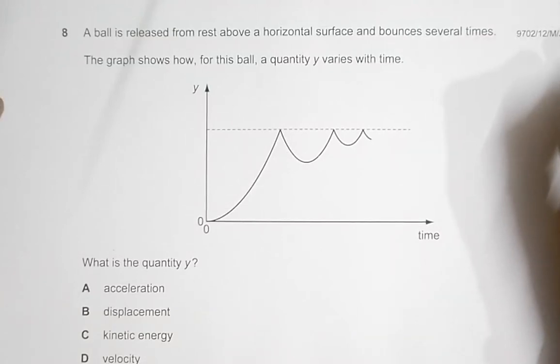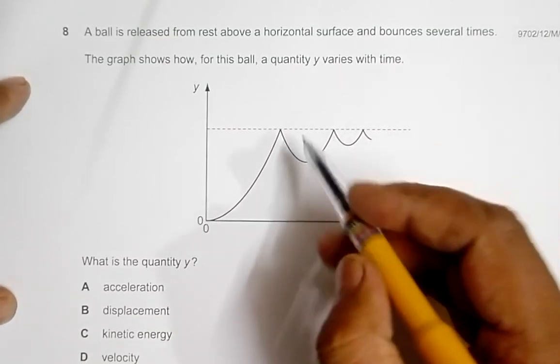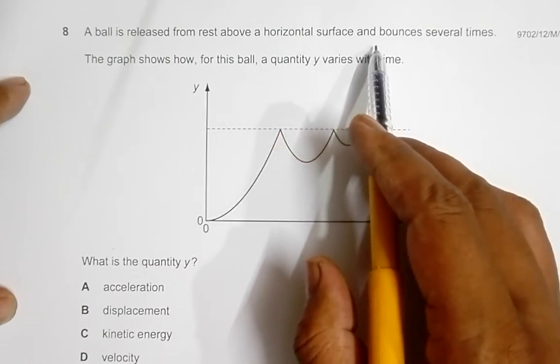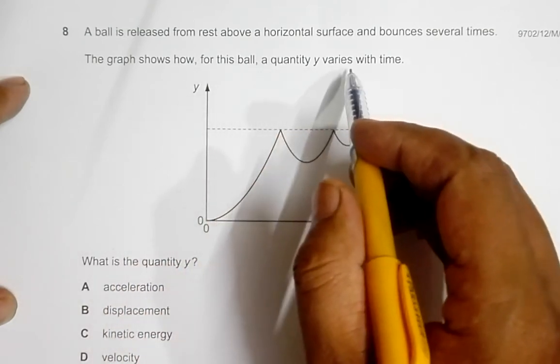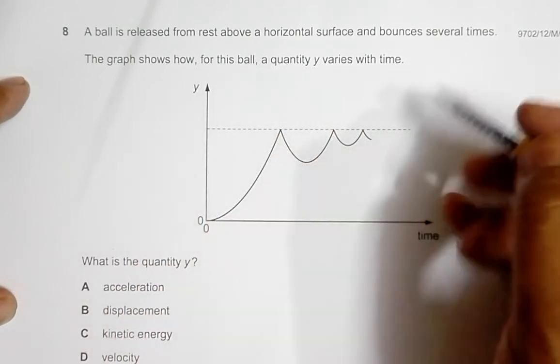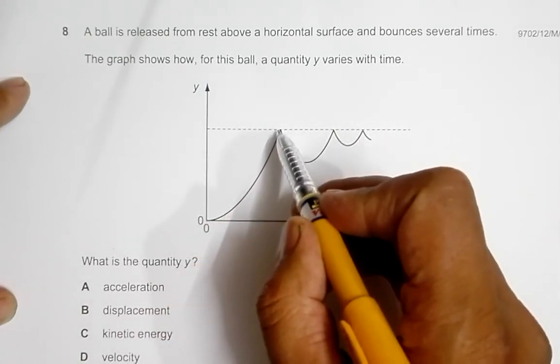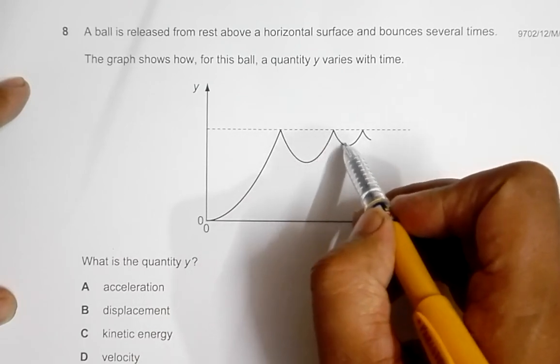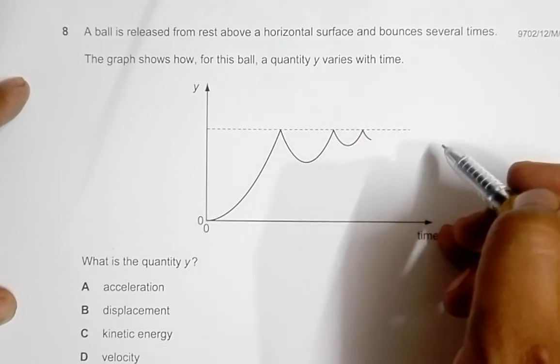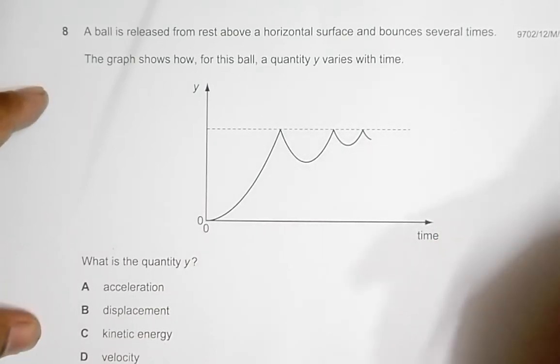This is the question from 2013 May June paper 12, question number 8. It says that a ball is released from rest above a horizontal surface and bounces several times. The graph shows how for this ball a quantity y varies with time. By the nature of the graph, it looks like it increases, of course decreases by some amount, again increases to the previous value, again decreases by some amount, and again increases to the previous value and so on. We have to identify which is the quantity y.